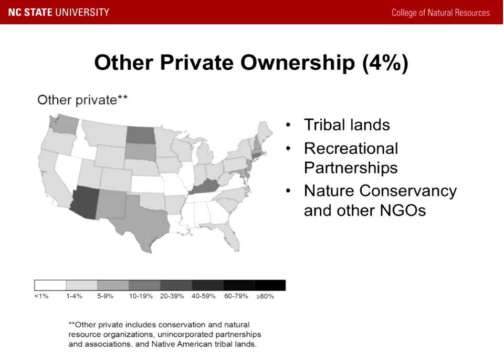About 4% of U.S. forests fall into the other private category. This is owned by tribal lands — as you can see in the southwest and up in the Great Plains — places like Kentucky with large land holdings owned by Native Americans. You also have groups such as the Nature Conservancy, recreational partnership hunt clubs, and similar organizations that own forest land.